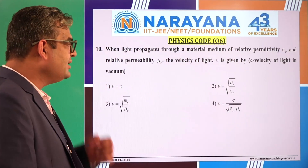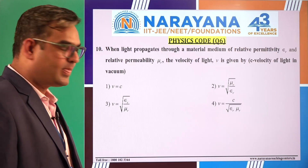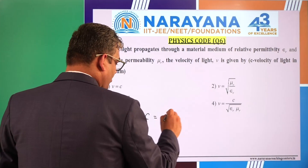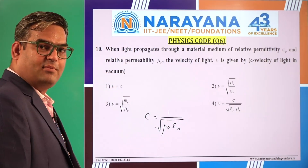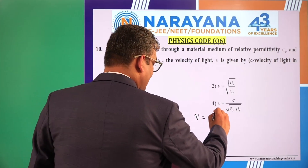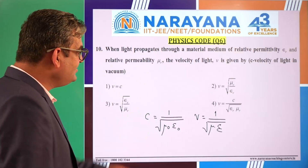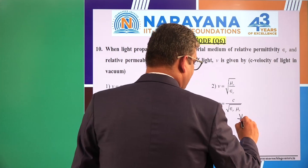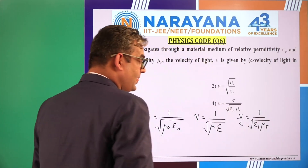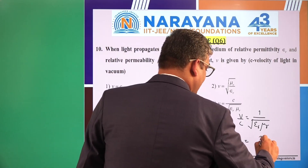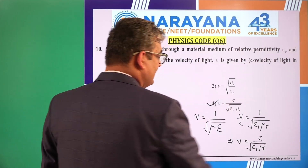When light propagates through a material medium of relative permittivity εᵣ and relative permeability μᵣ, the velocity of light V is given by? The speed of light C equals 1 over root of μ₀ε₀. Speed of light in a medium is 1 over root of μ times ε for that medium. Dividing these, V/C equals 1 over root of εᵣμᵣ, so V equals C divided by root of εᵣμᵣ. Hence option 4 is the correct answer.